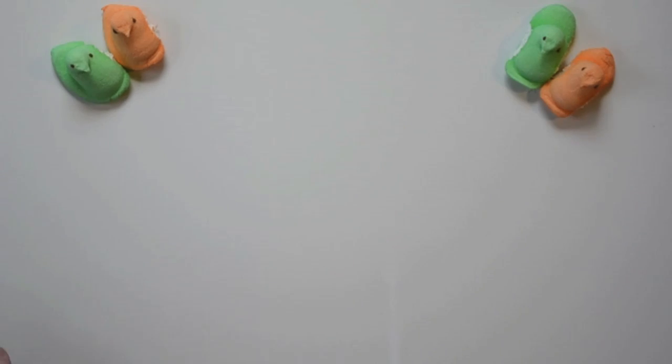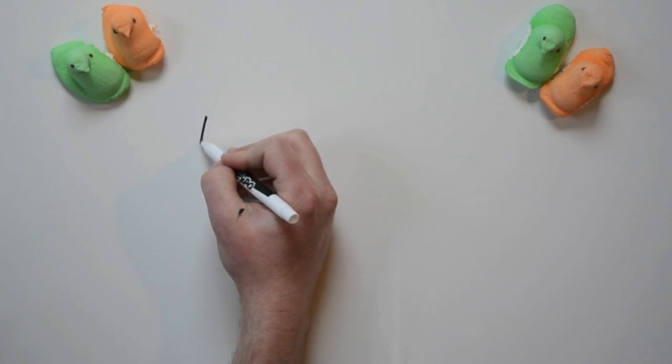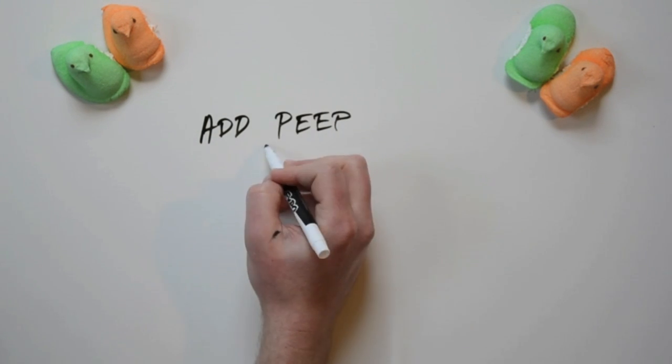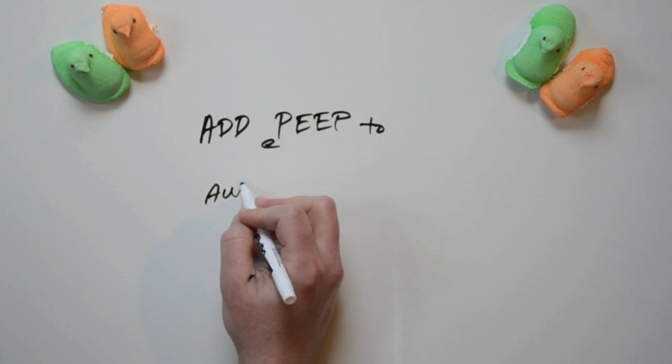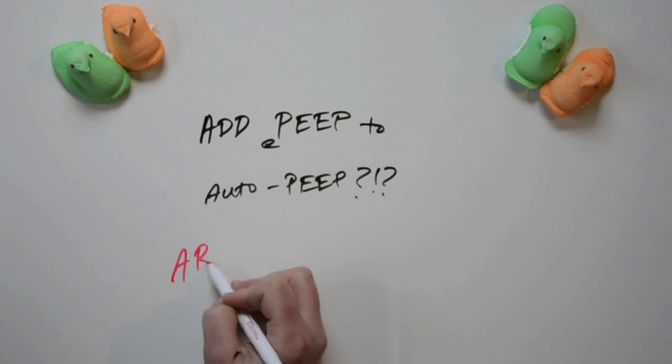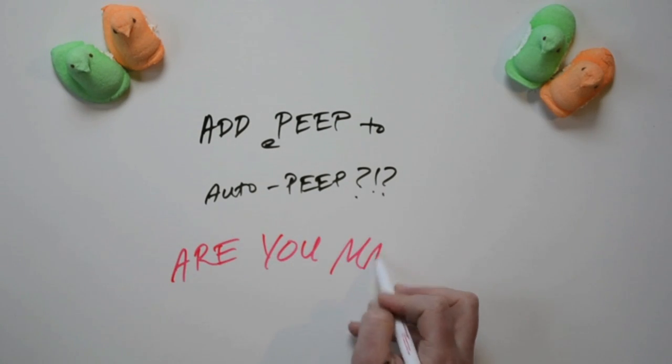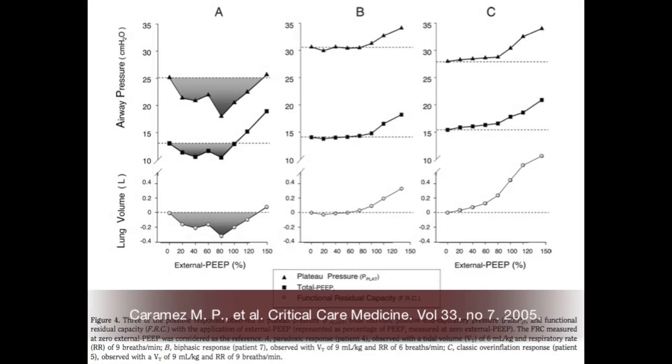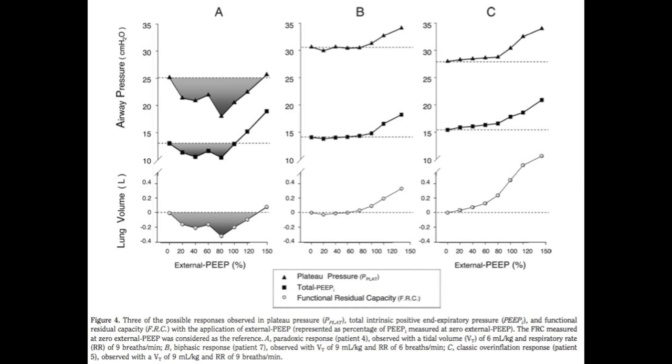What about the patient who has some auto-PEEP present? You've done everything you can to make sure they're exhaling as much as possible and decreased their air trapping as much as possible. What happens when you add PEEP to that patient? It may be intuitive to think that if I add PEEP to them, their pressures are going to increase, and that's just craziness. Well, maybe they'll increase, maybe they won't. There was a study in Critical Care Medicine several years ago by Carmez et al., who looked at applying varying levels of PEEP to patients with obstructive lung physiology. They would apply PEEP in increments of two from zero up to 150% of what the patient's intrinsic PEEP was, and they found three different types of responses.